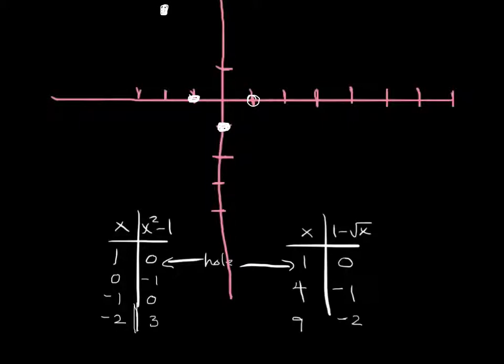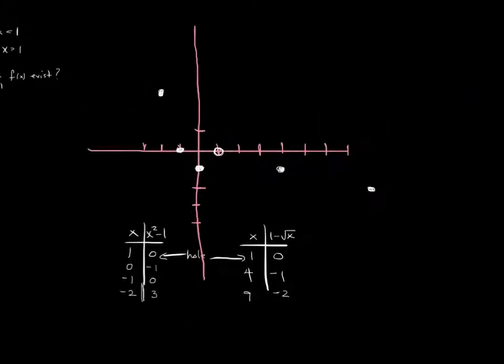Now we'll do the one on the right. We actually duplicate the point at 1, 0. Then we get 4, negative 1. And then 9, negative 2, which is like somewhere over here. Zoom that back out a little bit. And there we go.